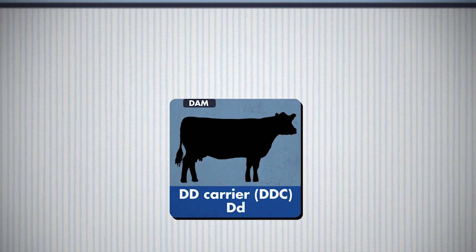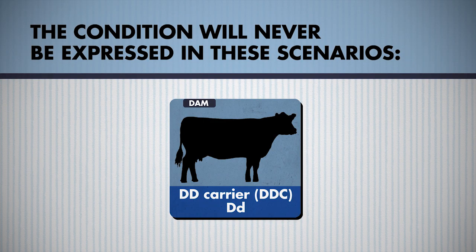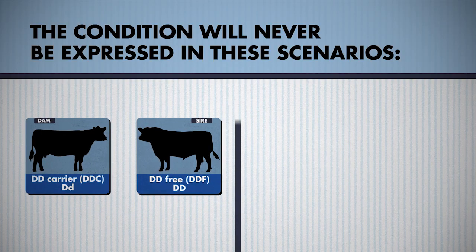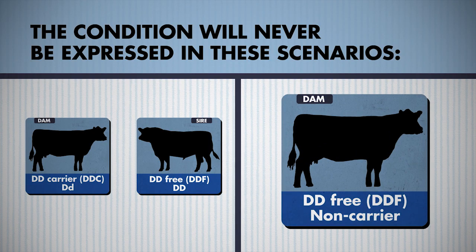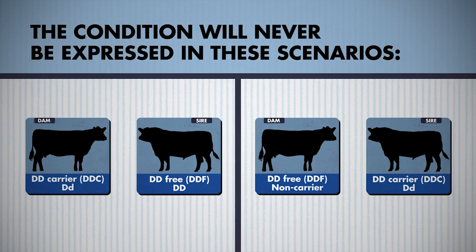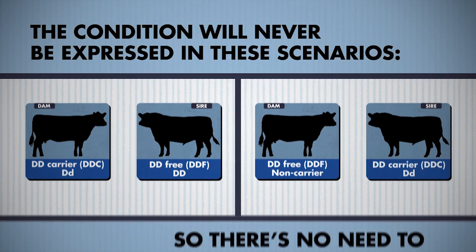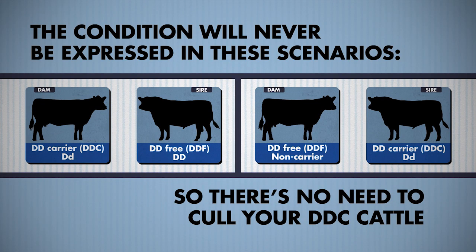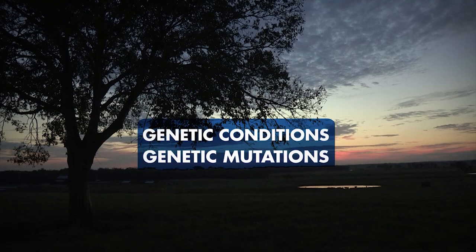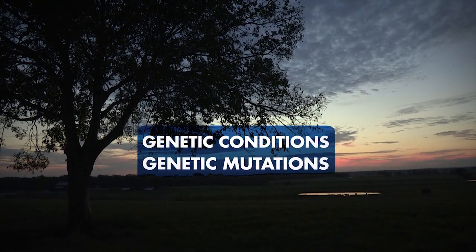If you suspect you have DD carriers in your cow herd, simply breed them to tested DD-free cattle and the condition will never be phenotypically expressed in your calf crop. And if your cattle are determined DD-free, then using a DDC carrier bull will also not result in a phenotypic expression of the condition. In either case, there's no need to cull your DD carrier cattle. Simply use the tools discussed in this video to make educated breeding decisions to avoid the undesirable impacts of genetic conditions.